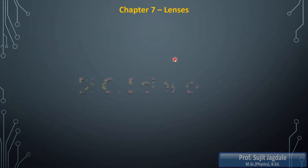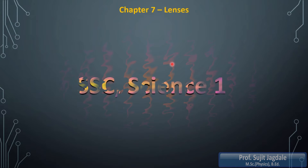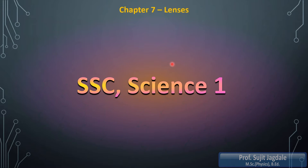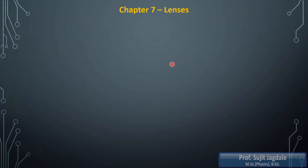Hello friends. In previous lectures we had considered chapter number 6, which is refraction of light, and from this lecture we are going to consider chapter number 7, which is lenses. The previous chapter videos I had already posted on YouTube, and I am going to share the link of all videos of chapter number 6. So without wasting time, here we are going to start chapter number 7.